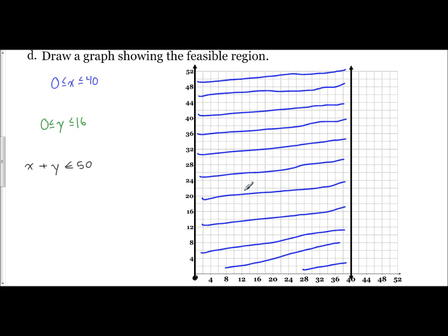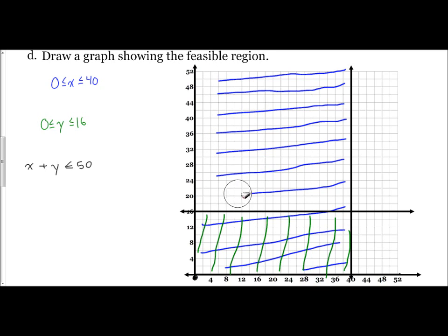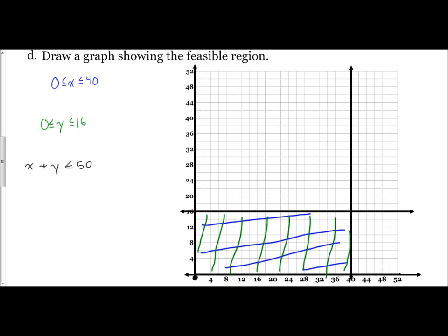And the next one says our Y value is between 0 and 16. So here's 0 on the Y axis. Here's 16 on the Y axis. Our Y is between those. So then I'm going to shade between those two horizontal lines. And so far, I see that somewhere in this rectangular region is my feasible region. So I'm going to erase the other part so my eyes can focus on the solution region being there.